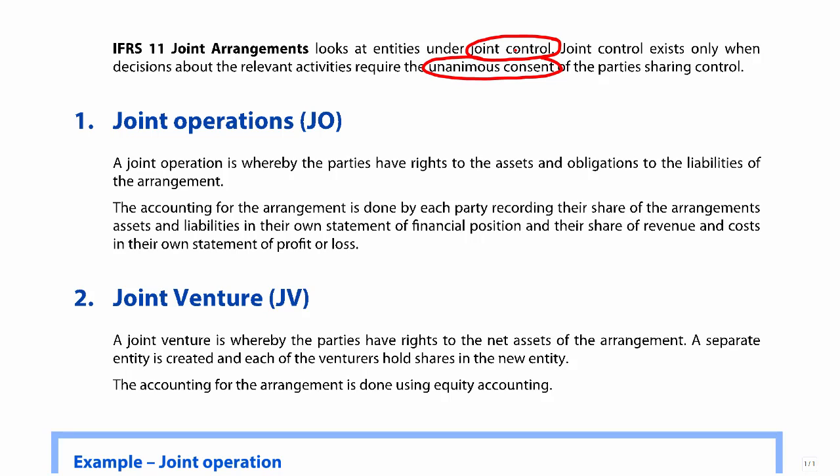When we have a joint arrangement, there are two types of joint arrangements: joint operations — a JO — and joint ventures — a JV. What is the difference?